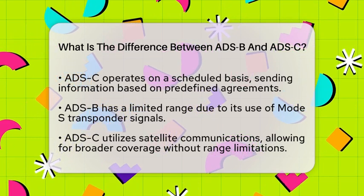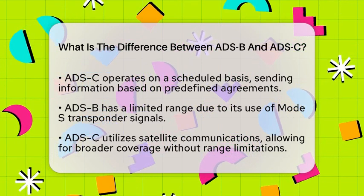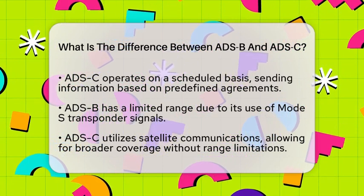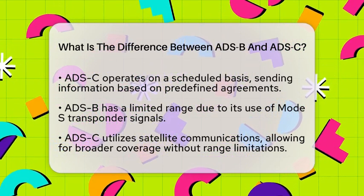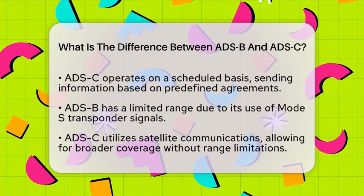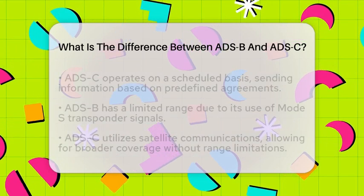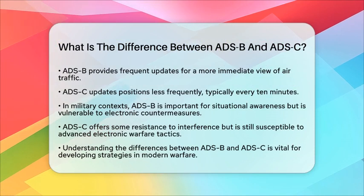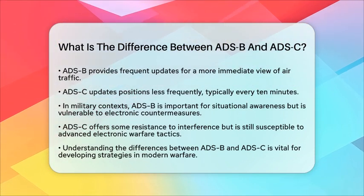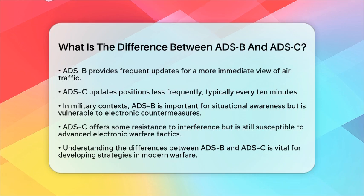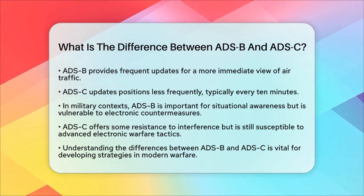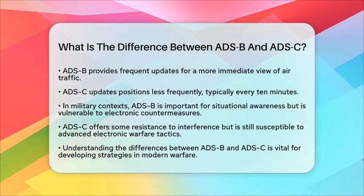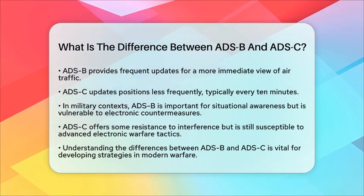In military contexts, ADS-B can be vital for tracking and situational awareness, especially for air defense systems. However, its broadcast nature makes it vulnerable to electronic countermeasures. These countermeasures can disrupt air traffic control and surveillance by jamming or spoofing signals. ADS-C, with its reliance on satellite communications and defined contracts, offers some resistance to interference. However, it is not immune to sophisticated electronic warfare tactics targeting satellite links. Understanding these differences is essential for developing effective strategies in modern warfare and electronic countermeasures.